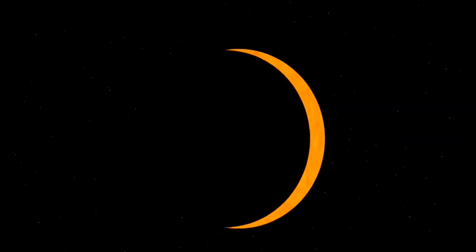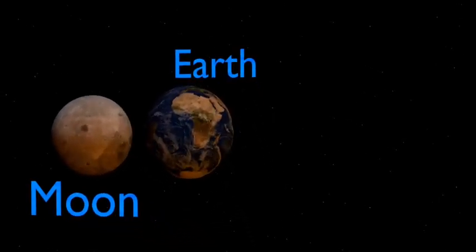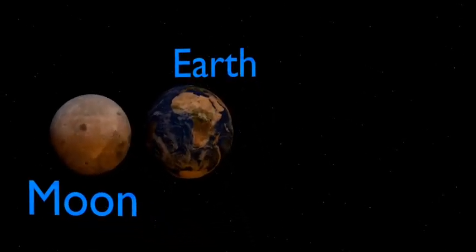An annular eclipse occurs when the Sun and Moon are exactly in line, but the apparent size of the moon is smaller than the Sun. Hence, the Sun appears as a very bright ring or annulus surrounding the dark disk of the moon. A partial eclipse occurs when the Sun and Moon are not exactly in line and the Moon only partially obscures the Sun.